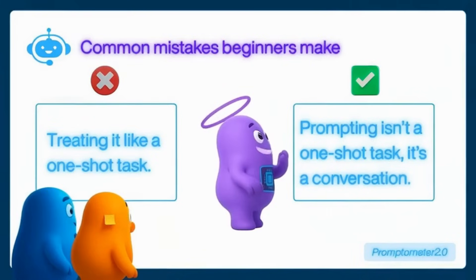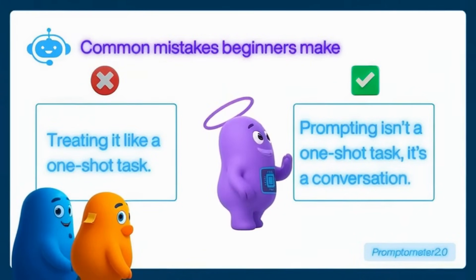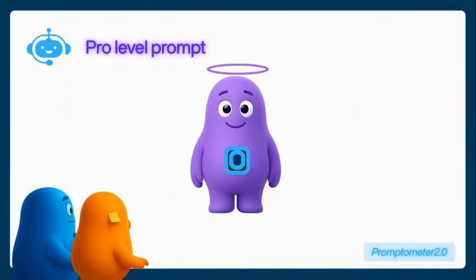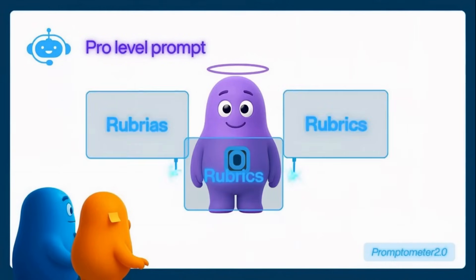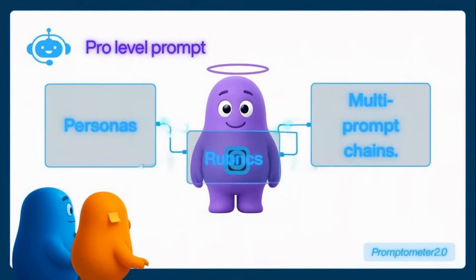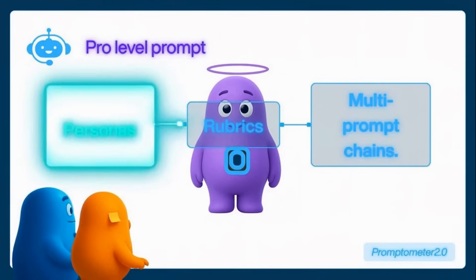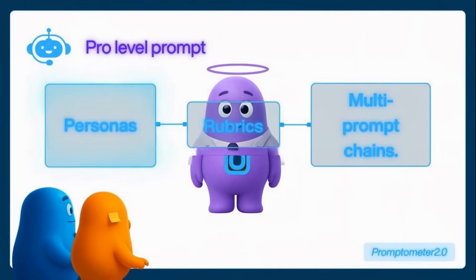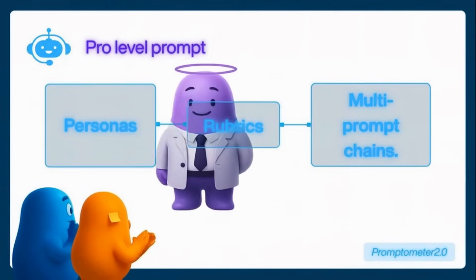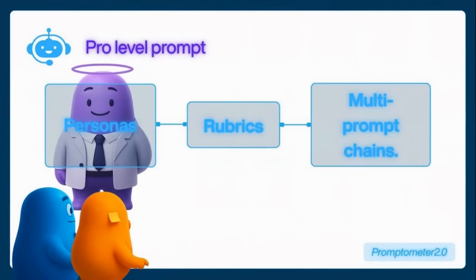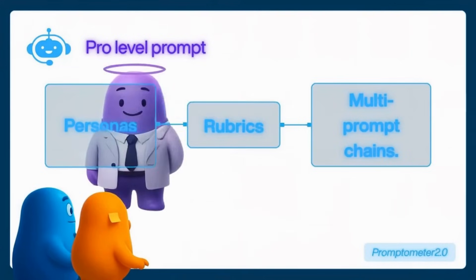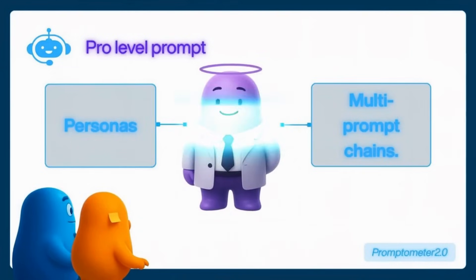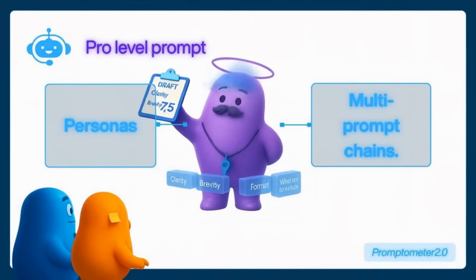Once you master those basics, you can move to the pro level using advanced tools like personas, rubrics, and multi-prompt chains. You can say, 'Adopt this voice: calm, professional, slightly humorous.' You can tell it, 'Score your own draft for clarity and brevity, then improve it.'